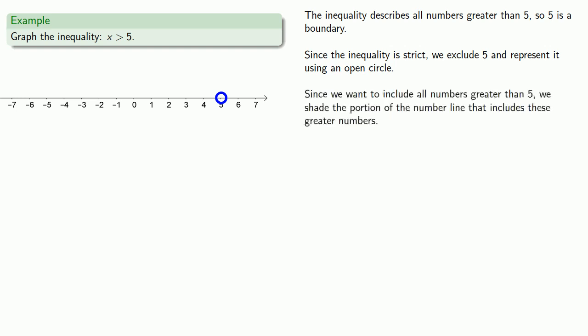Since we want to include all numbers greater than 5, we shade the portion of the number line that includes these greater numbers. So we shade the part of the number line to the right of 5. If there's just one problem, where do we stop?